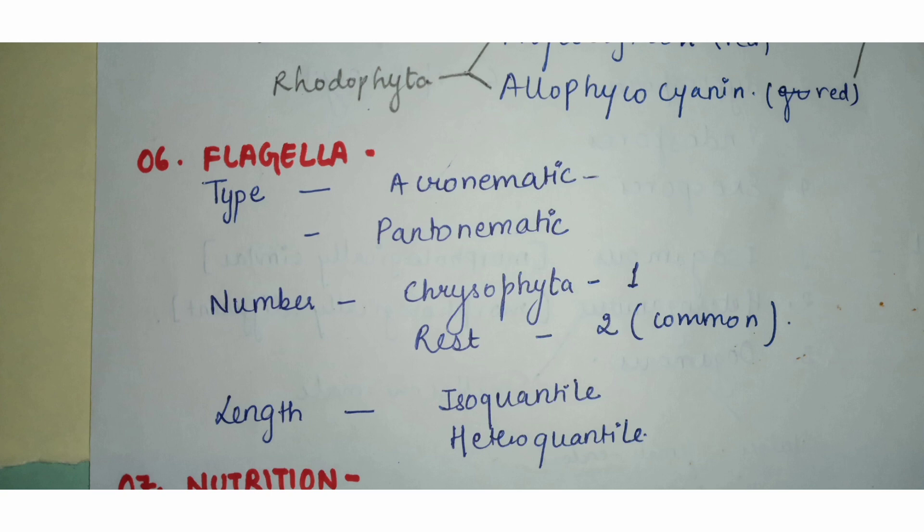One important point to note is that the presence of flagella is a primitive character — algae that have flagella are the more primitive algae. In the course of evolution, flagella as a vegetative cell feature has been lost and is now only present in reproductive cells of more advanced algae.